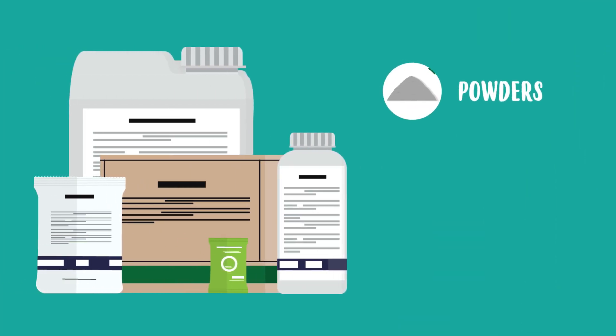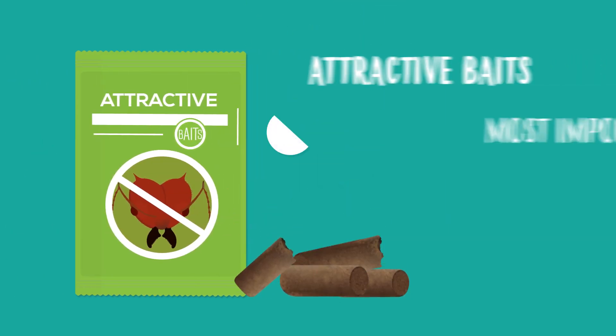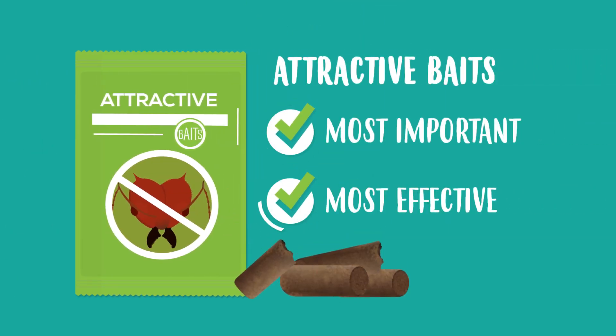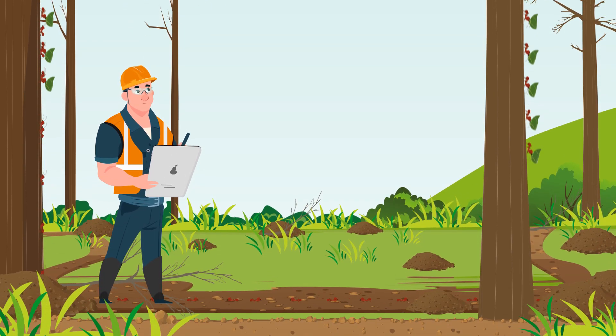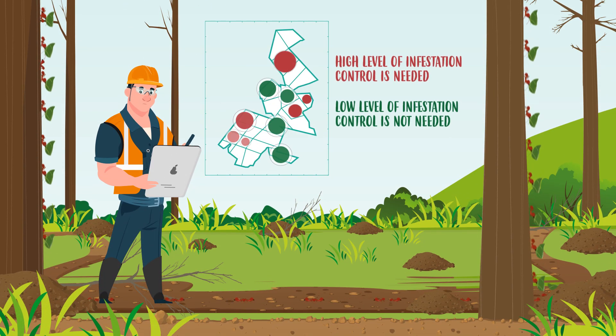These products are available as powders, liquids and attractive baits. Baits are the most important and effective method of control. Ant control is performed during planting or when monitoring shows that the level of infestation is high and may present a risk to forests' growth.